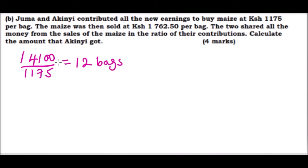They sold at 1762.50 per bag. We can calculate profit. One bag was sold at 1762.50, you minus the buying price which is 1175, that's the profit per bag, and you multiply by 12 bags.